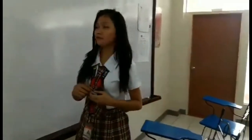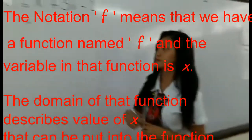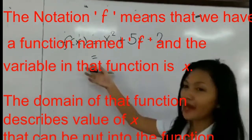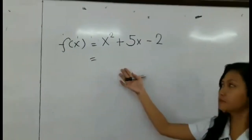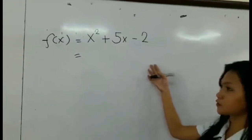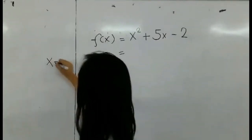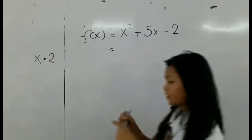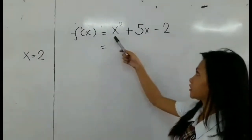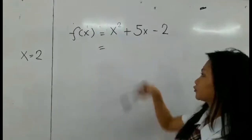This is one of the examples of evaluation of functions. f(x) is equal to x squared plus 5x minus 2. So if x is equal to 2, therefore we will change the x here to 2.